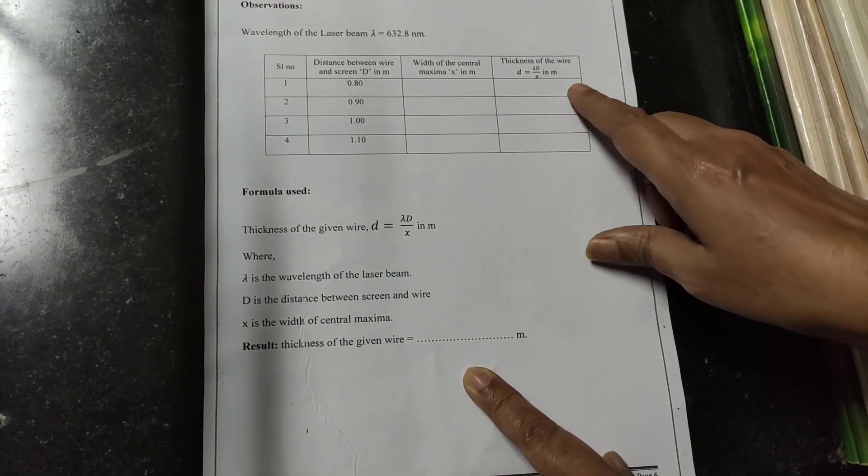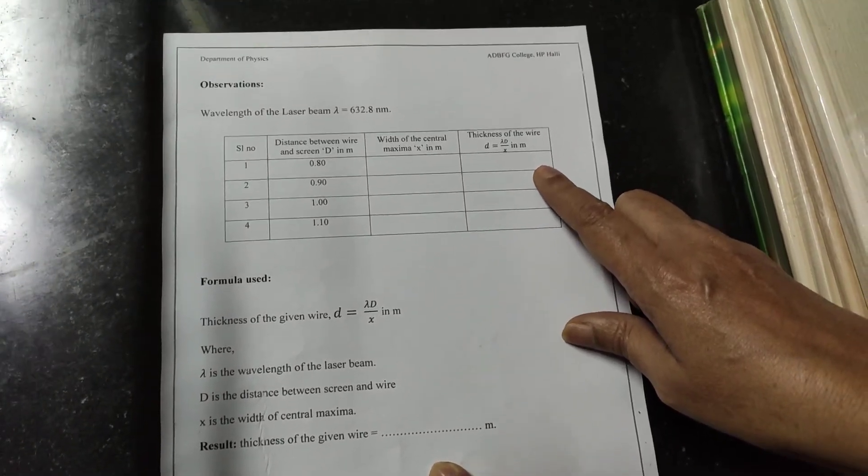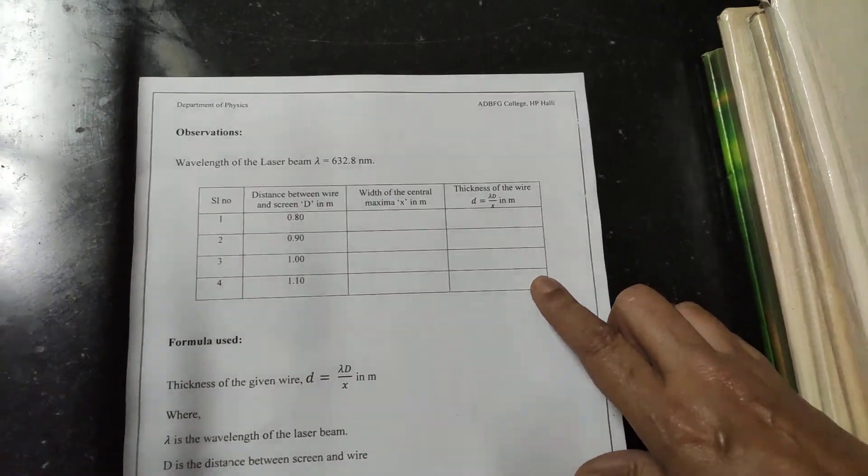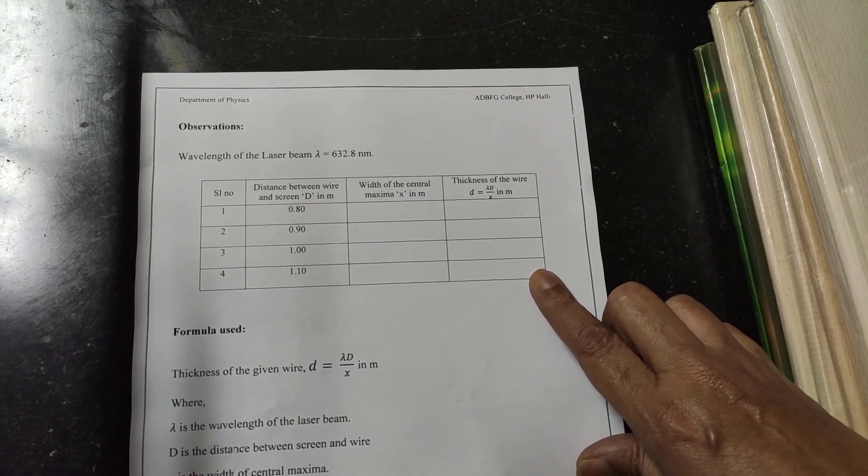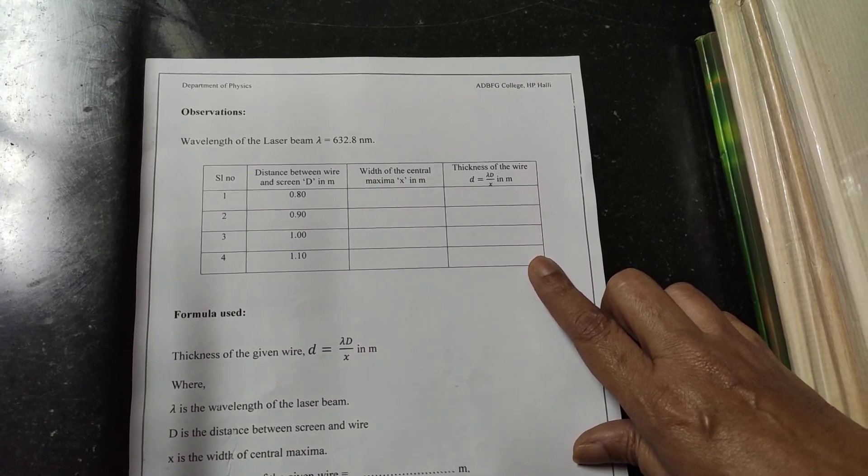Take care that all the values must be, all the four trials. If you are taking a reading for four trials all the four readings must be consistent. So this is all about the diffraction at a wire.